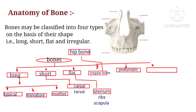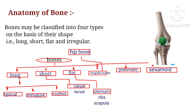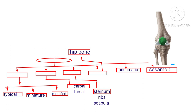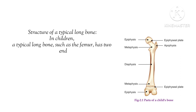Sesamoid bones are bony nodules present within tendons or joint capsules. They are not covered by periosteum. They develop within the body, and the most important example is the patella. Now let's discuss the structure of a typical long bone in detail, using the femur as an example.